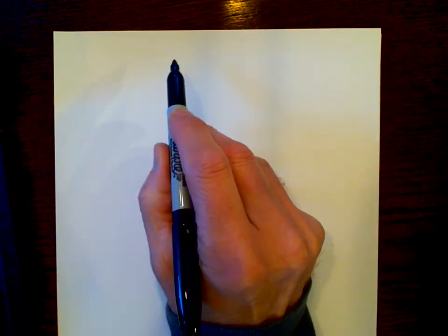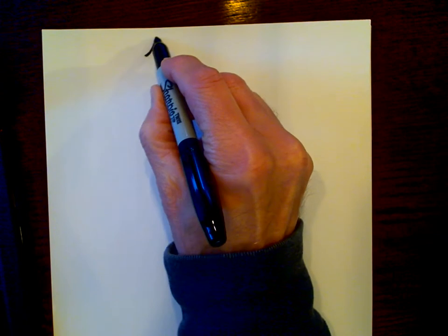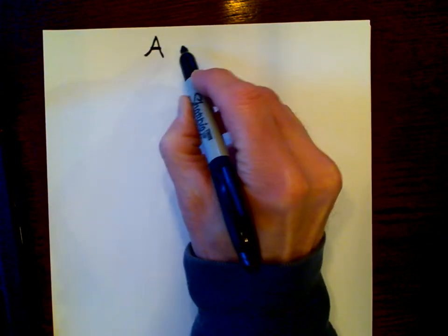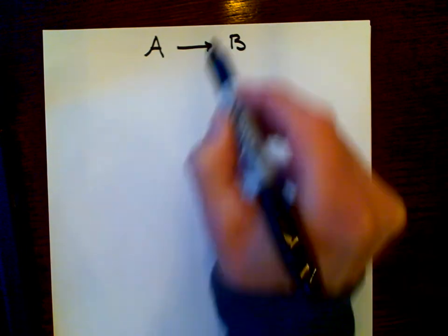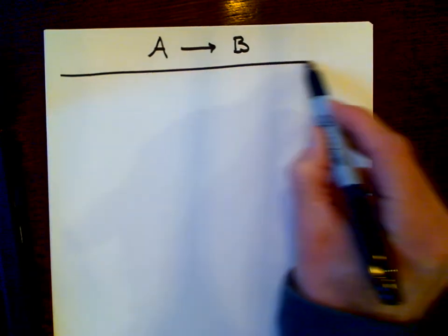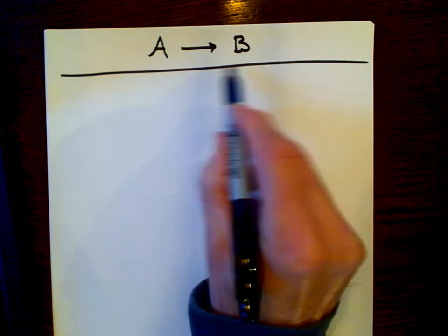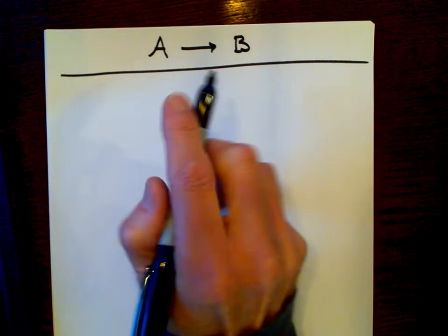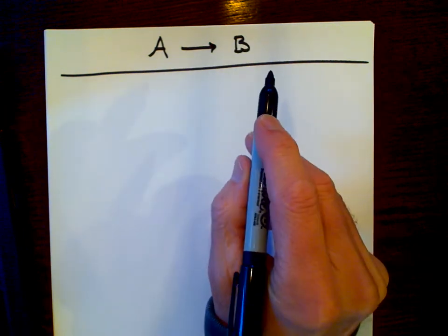Let's see how we get systems of differential equations for different mechanisms. We'll start with a simple case. Let's imagine we have a reaction where some molecule A is getting transformed into some molecule B. We're going to assume, to make it really simple, that the mechanism by which this happens — the actual chemical steps — is exactly the same as the overall reaction.